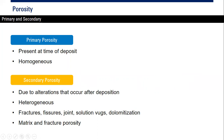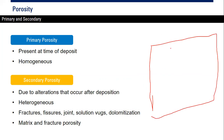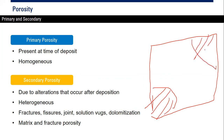The porosity in one zone of a reservoir can be different from another zone because secondary porosity is heterogeneous. We find it in the form of fractures, fissures, joints, solution vugs, and dolomitization — all resulting in secondary porosity, which can appear as matrix or fracture porosity.